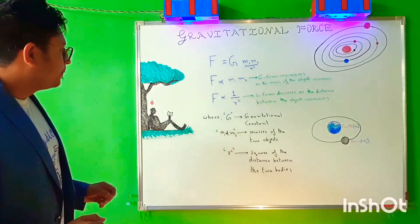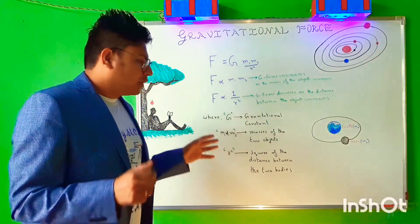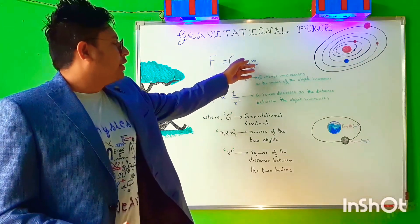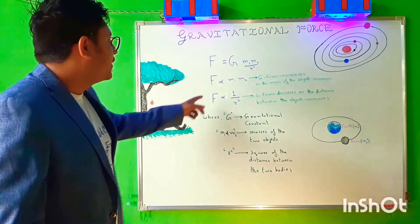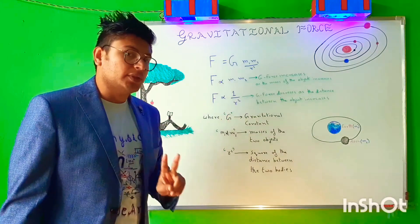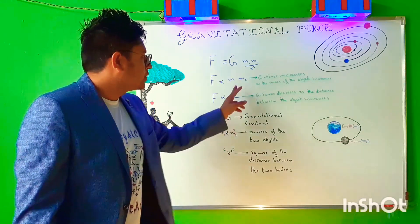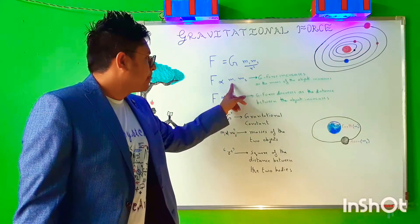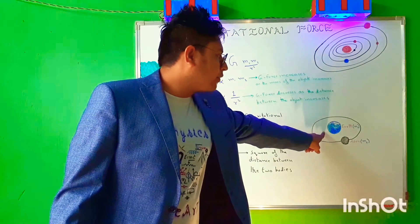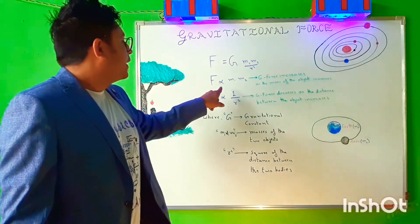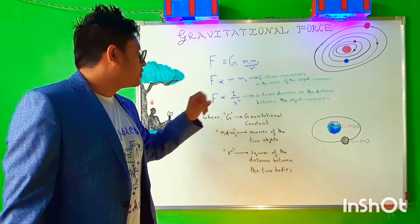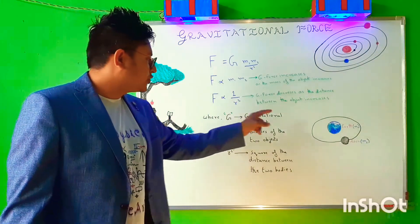So he comes out with a mathematical formula for this particular law as F equals G M1 M2 divided by R square. F is directly proportional to M1 and M2, that is the mass of the two bodies. M1 is the mass of body one - in this particular case I'm assuming Earth to be M1, M2 to be M2. And F is also inversely proportional to 1 by R square, where R is the distance between the two bodies.